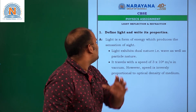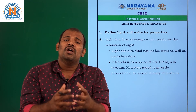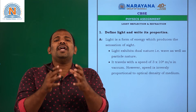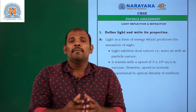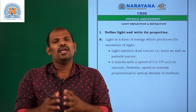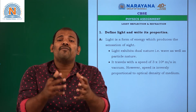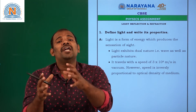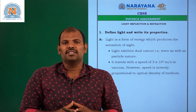Now, what are the properties of light? Light exhibits dual nature — it has both wave nature as well as particle nature. Light travels with a speed of 3 × 10⁸ meters per second in vacuum or in air. The speed of light is also related to the density of the medium through which it travels, which is also called the refractive index.